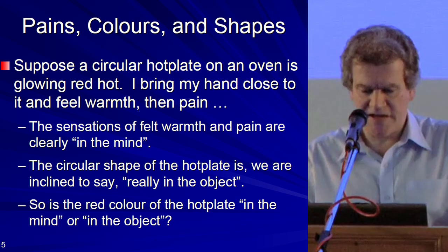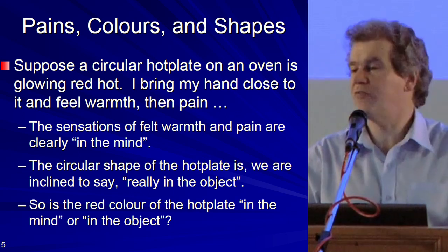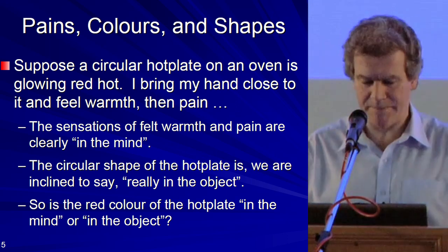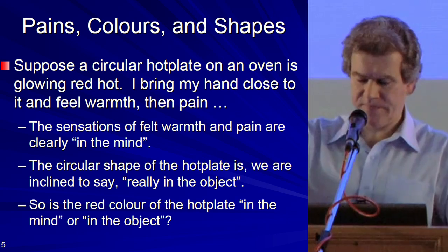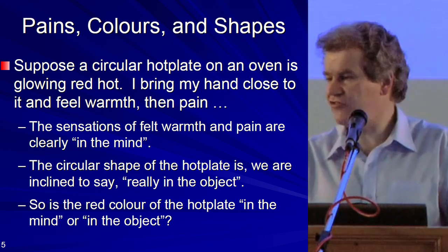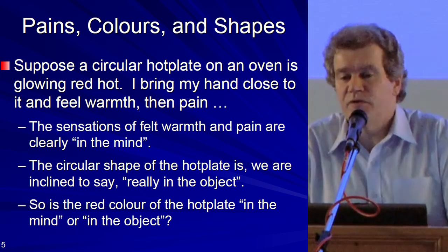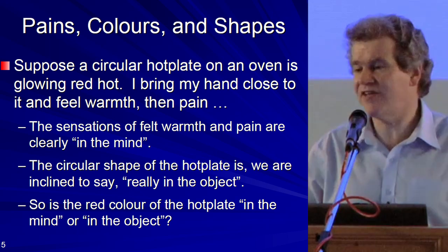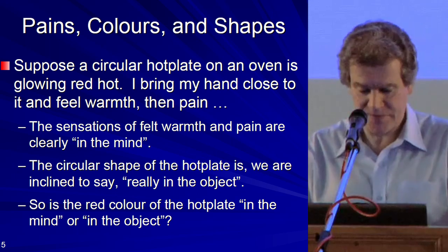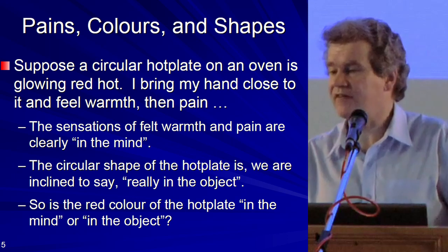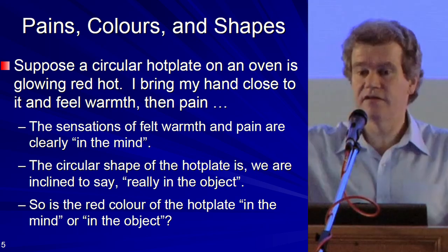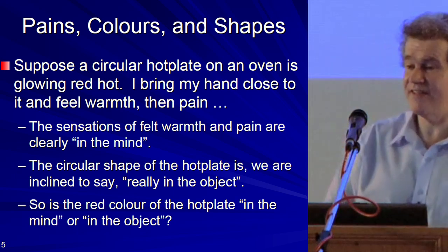Consider the case of a circular hot plate on an oven, heated until it's glowing red hot. I bring my hand close and feel warmth; closer still and I feel pain. The sensations of felt warmth and pain are clearly in the mind — we don't attribute the pain to the hot plate itself. The circular shape we are inclined to attribute to the object. But what about the red colour — is that in the mind or in the object? There's a tension here.